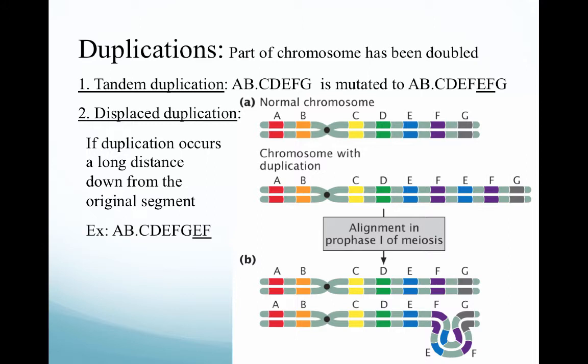The second type is displaced duplication, which is not shown in the tandem duplication figure. Displaced duplication is where the second copies of the genes occur a long distance away from the original copy. In this example, after the centromere we have genes C, D, E, F, G, and then E, F again — that duplication shows up further down from where it was originally copied.